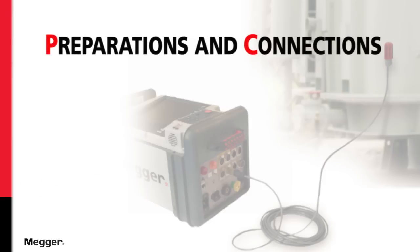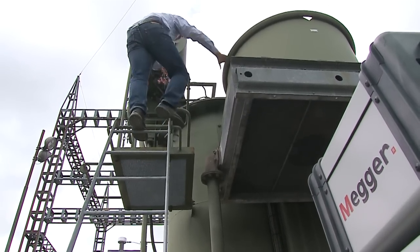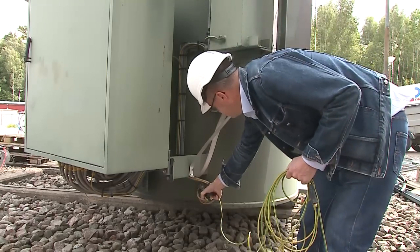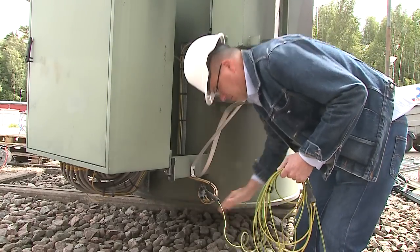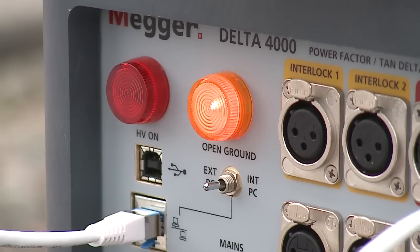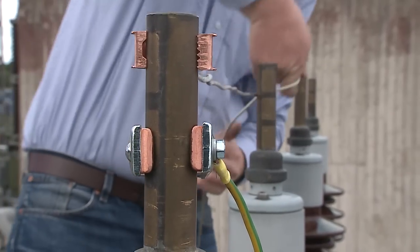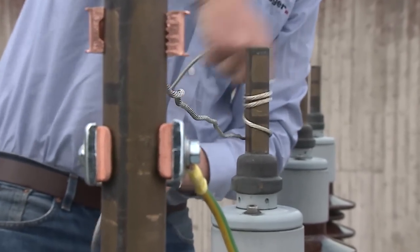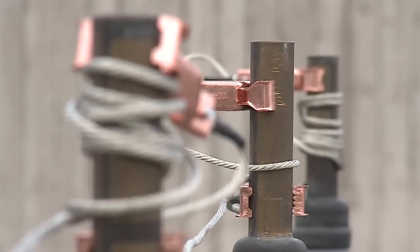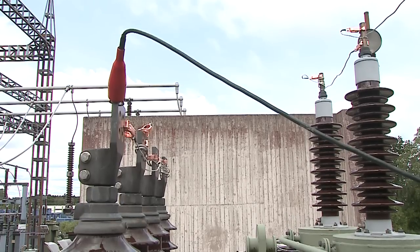Preparations and Connections: Remove all connections to the transformer bushings, including lightning arrestors and bus bar. Isolate neutral winding from ground connections. We prepare the Delta 4000 by connections to transformer ground. Short all phases for each winding together, ensuring shorting leads do not droop. Connect HV and low voltage red lead to windings. Transformer is now ready for testing.